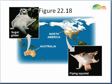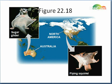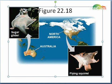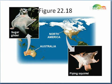An example of convergent evolution is sugar gliders, a type of mammal found in Australia, and flying squirrels found in North America. Both have had to adapt to environments of living high up in trees, so being able to glide or fly is an adaptation that's beneficial to both species. Even though they do not share a common ancestor, they share this analogous characteristic.